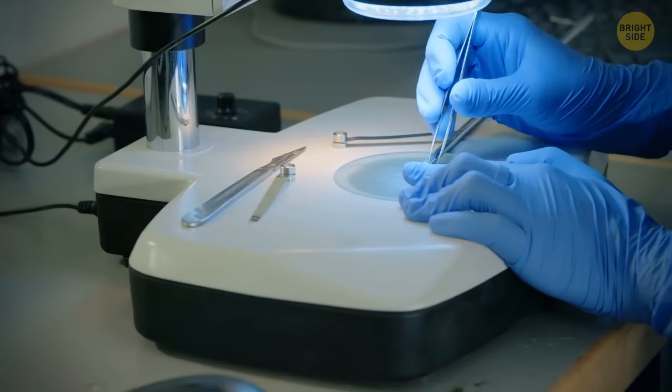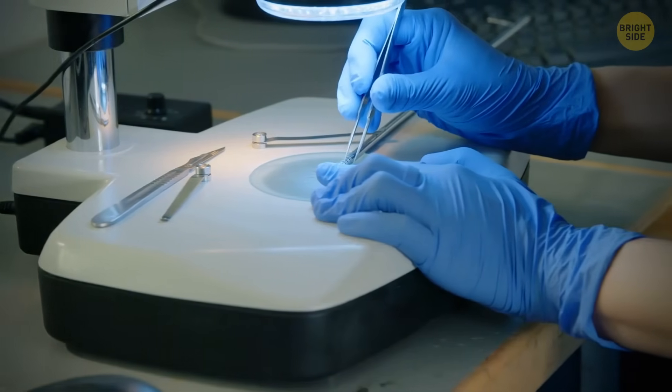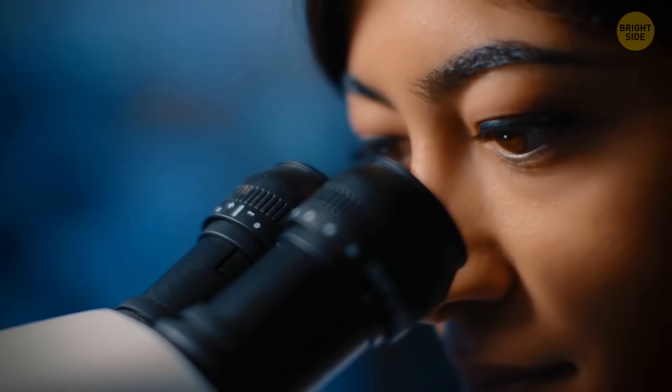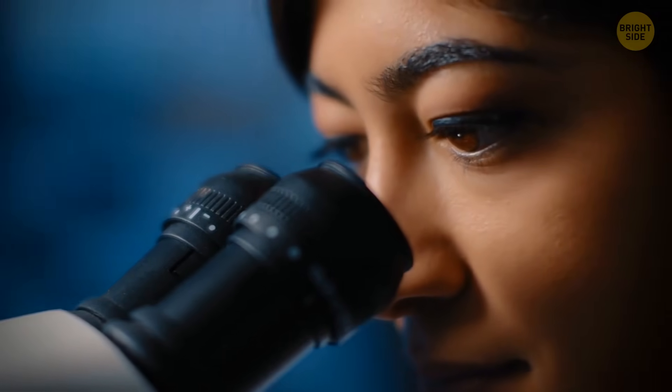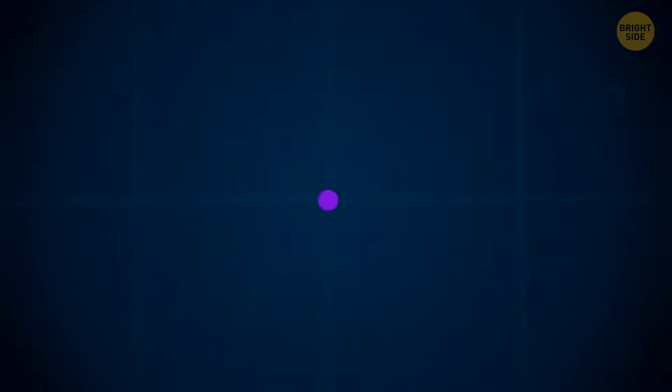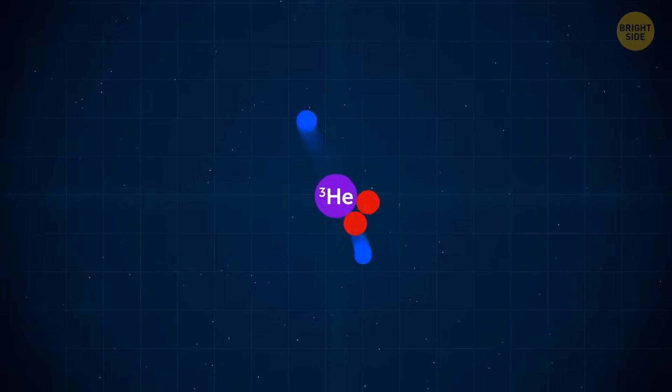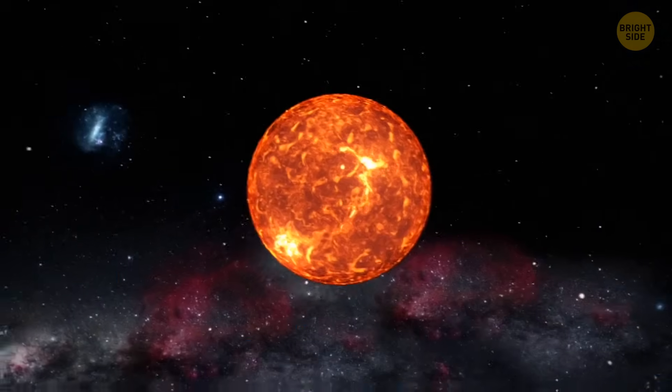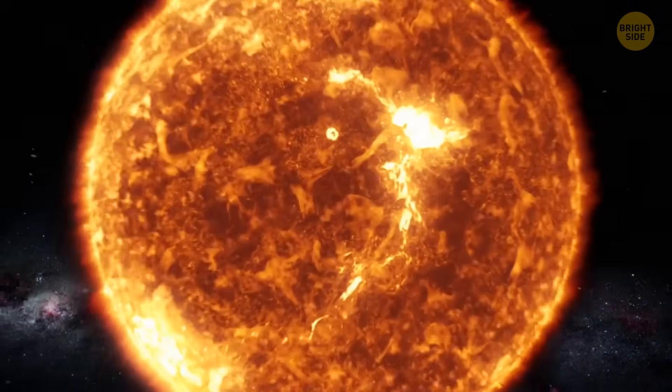However, this tiny crystal still wasn't the only remarkable thing they found. After studying this gem and about 140,000 other lunar particles, scientists have discovered something else. They found helium-3. Why is it so important? Because this is one of the elements that feed the Sun and other stars in our universe.